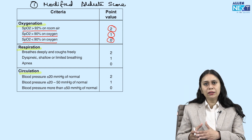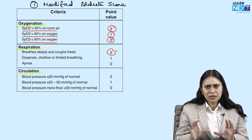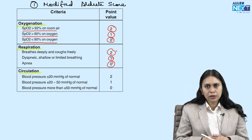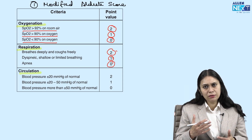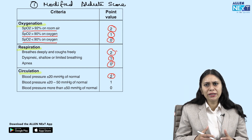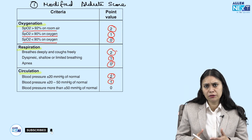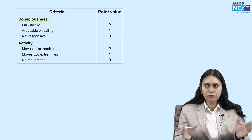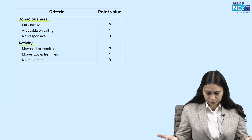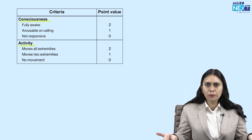For respiration: if the patient can breathe, cough, and protect his airway, it is 2. If the patient is dyspneic, it is 1. If the patient is apneic, it is 0. For circulation: if the mean arterial blood pressure is within plus or minus 20 of normal, it is 2. Between plus or minus 20 to 50 mmHg of normal, it is 1. If the fluctuation is more than plus or minus 50, it is 0. For consciousness: fully awake is 2, arousable when called is 1, and unresponsive is 0. For activity: all four limbs moved is 2, only two limbs moved is 1, no limb moved is 0.